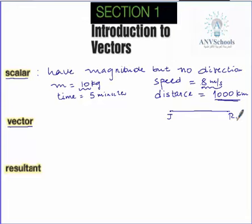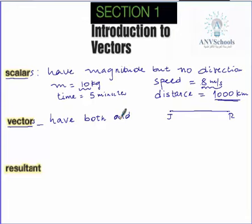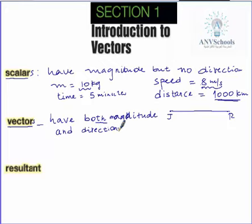The next type of physical quantities is vectors. Vectors are physical quantities which have both magnitude and direction. To describe a vector physical quantity, we need both magnitude and direction. Magnitude means the number, and direction tells us where the object is going — whether it's going east, west, north, or south.